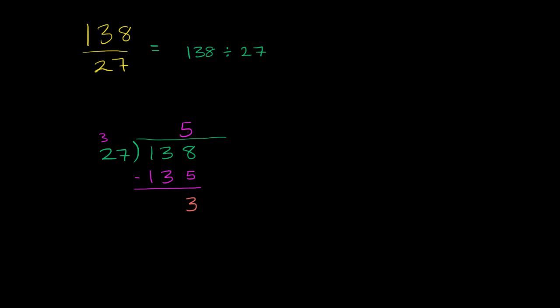27 goes into 138 five times. And if we wanted to keep dividing it, it would be 5 and 3 27ths. Or another way of thinking about it, five times. And there's a remainder of three. So we have 3 27ths left over.